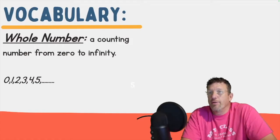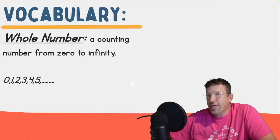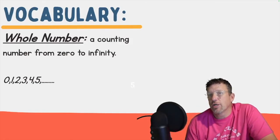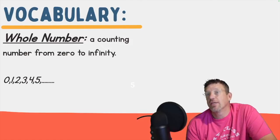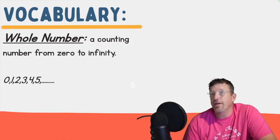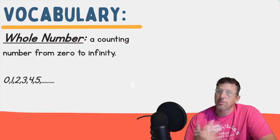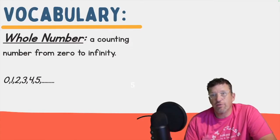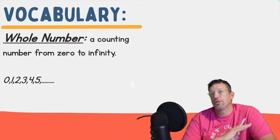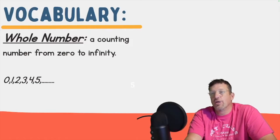Next is a whole number. It's all those counting numbers we just talked about — one, two, three, four, five, six, seven, forever on into infinity. But it also adds zero. No negative numbers, no fractions, no decimals — just zero, one, two, three, four, five, and as long as you can count.